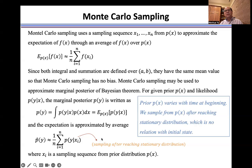Since prior p(x) varies with time at beginning, the sample from prior after reaching stationary distribution, which has no relation with initial state.